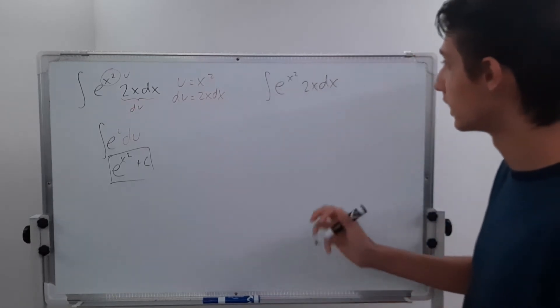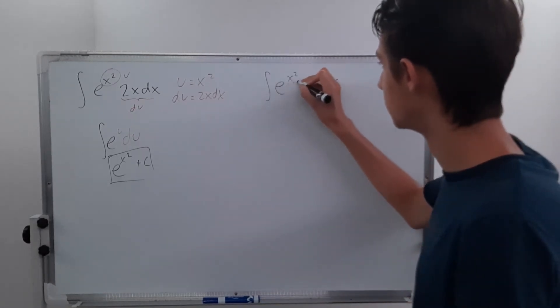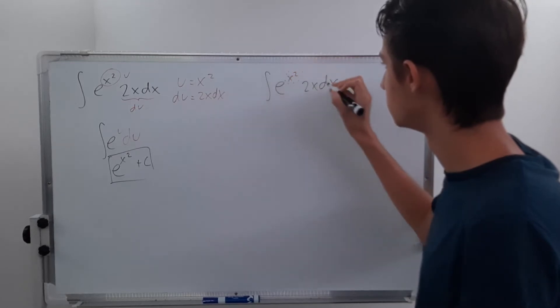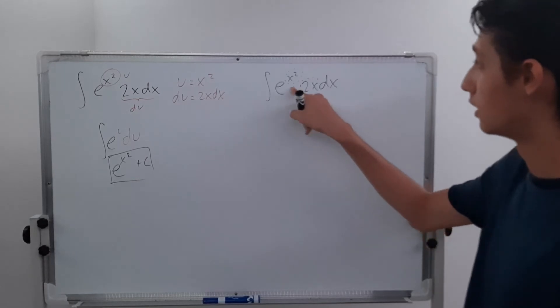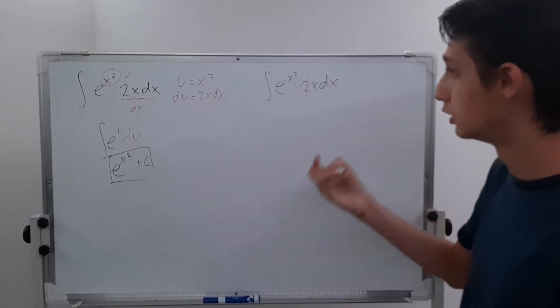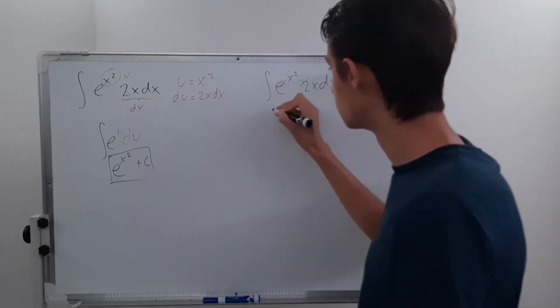So you can recognize that you have your x squared here, and you have your 2x down here. And if you recognize that the derivative of x squared is 2x, you can write this in a cool little way.